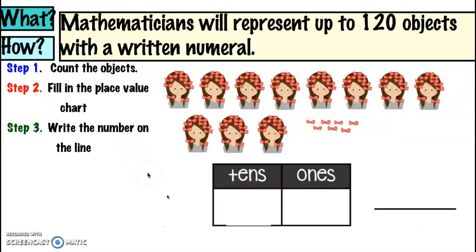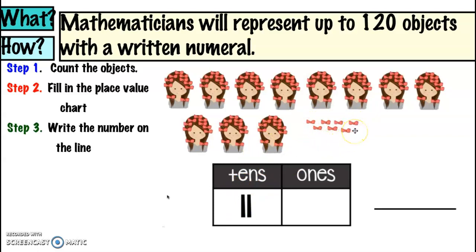Looks like someone is trying to get her hair done. We're going to count the objects, fill in the place value chart, and then write the number on the line. We have someone with balls in her hair. We know that one head has ten balls. So how many groups of tens do we see? Let's count them — eleven groups of tens. How many ones do we see? Seven. Eleven tens and seven ones gives us 117.